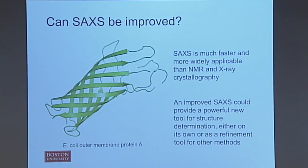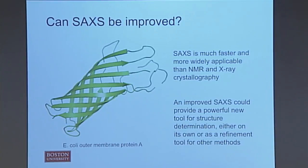The idea of my project is: can small-angle X-ray scattering be improved? SAXS is much faster than X-ray crystallography because there's no time-consuming crystallography step, and it has essentially no size limit, unlike NMR. My central question is: can improved small-angle X-ray scattering provide a tool for protein structure determination? The model I'm working with is a membrane protein, outer membrane protein A.